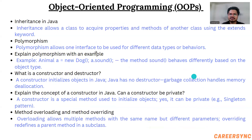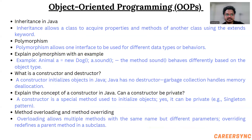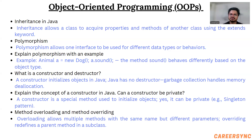Now let's move towards the object-oriented programming questions. Inheritance, polymorphism, abstraction — all these questions are very important. What is inheritance? When a class acquires all the properties and behavior of another class using the extends keyword, it is known as inheritance. For polymorphism — in polymorphism, we solve a single task using different methods.